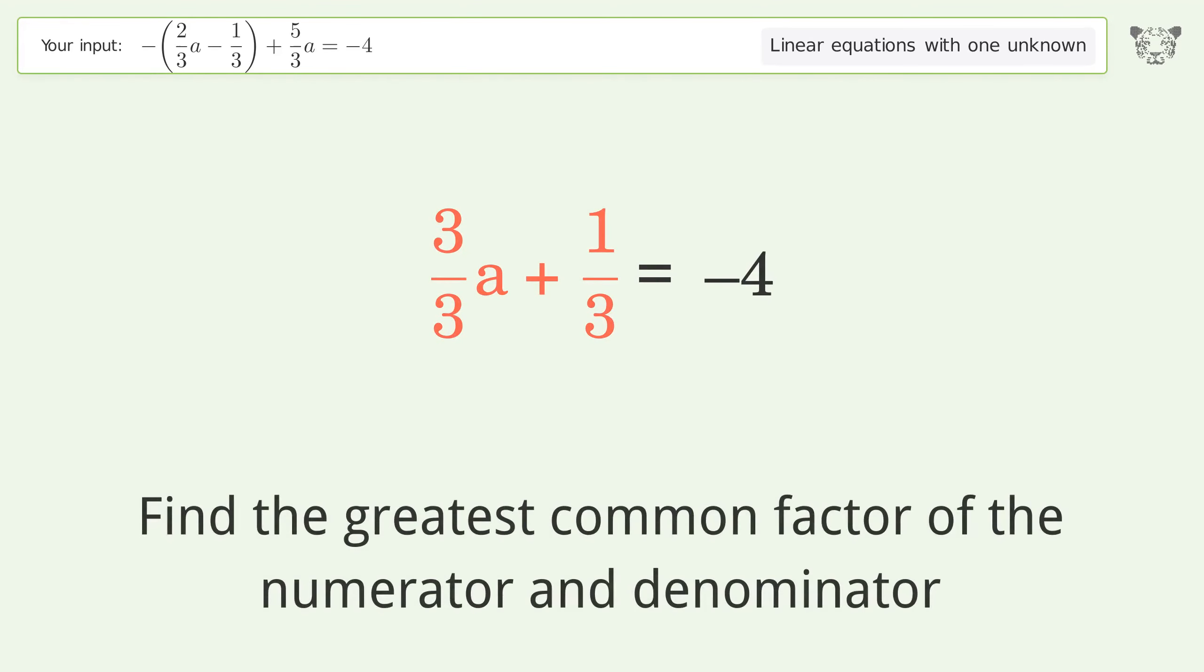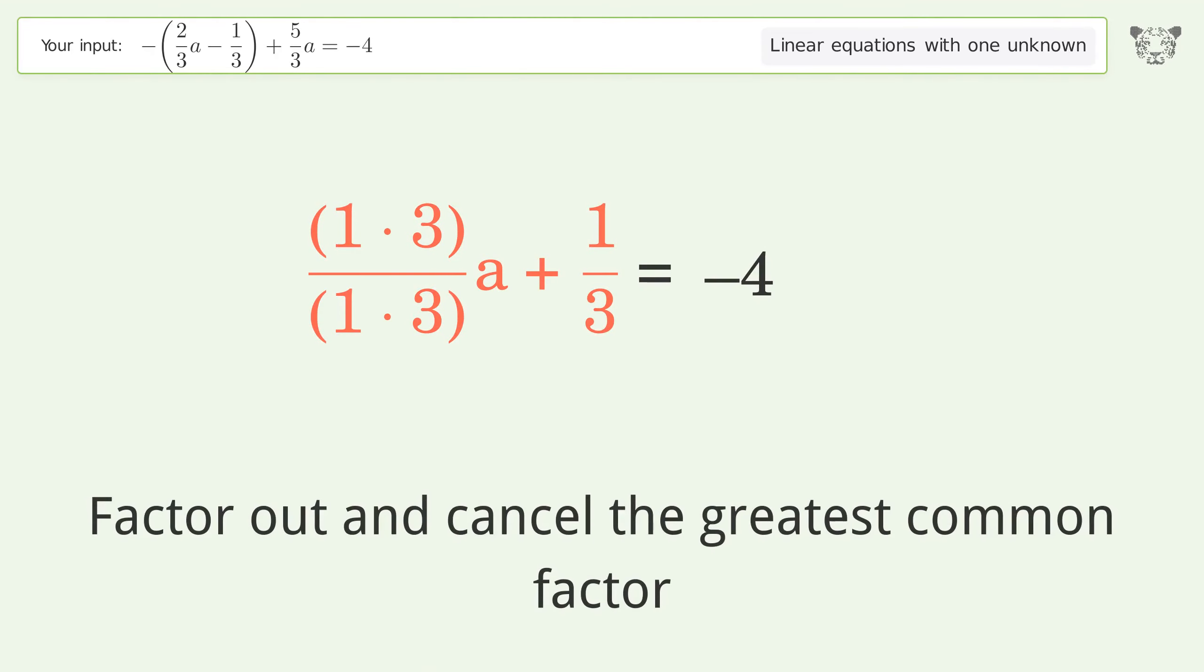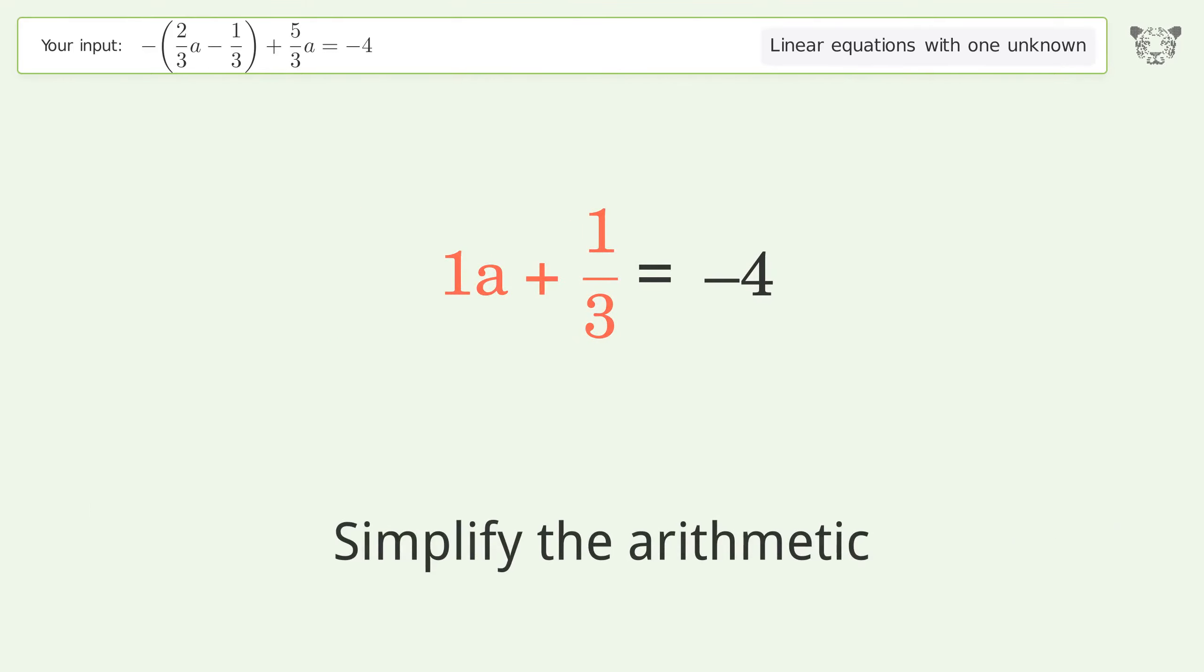Find the greatest common factor of the numerator and denominator. Factor out and cancel the greatest common factor. Simplify the arithmetic.